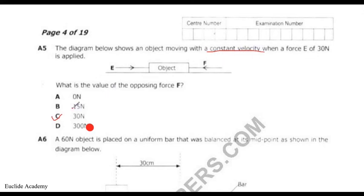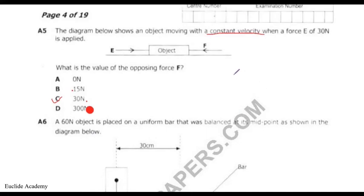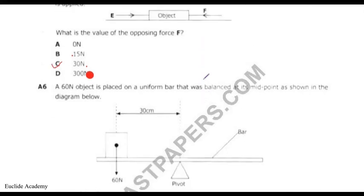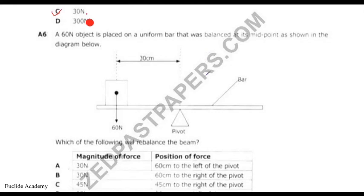Since the object moves at constant velocity, the net force is zero. The applied force is 30 newtons, so the opposing force F must also be 30 newtons to balance it. The answer is 30 newtons. We'll end here — the rest of the paper will be covered in the full class.